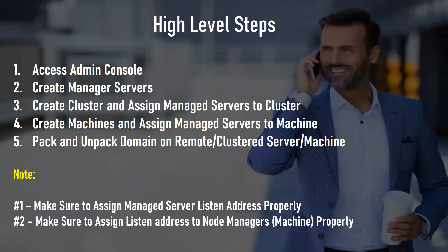An important point to note: when you create a managed server or a machine, make sure to assign the IP address properly. For example, managed server 1 should be on node 1 with IP address 192.168.0.1, and managed server 2 should be on node 2 with IP address 192.168.0.2. Similarly, when you configure your node manager inside the machines, make sure to assign the IP address properly, since the node managers on each node will be running on different IP addresses.